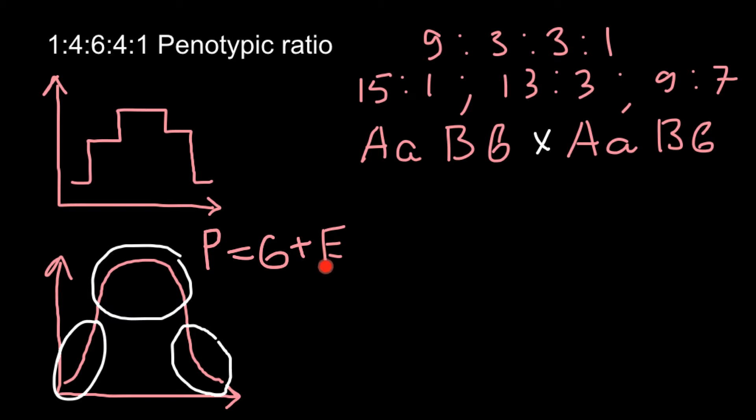Very few traits produce such a distinctive distribution because phenotype equals genotype plus environmental influence. Very few traits are unaffected by environment — for example, blood type. If you are blood type AB, no matter what climate you live in or what food you eat, you will still be blood group AB.